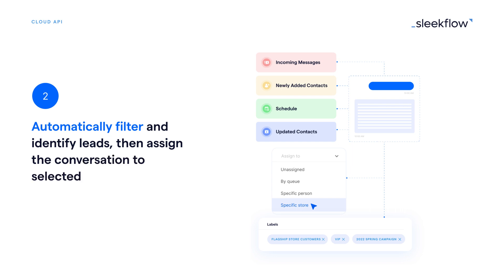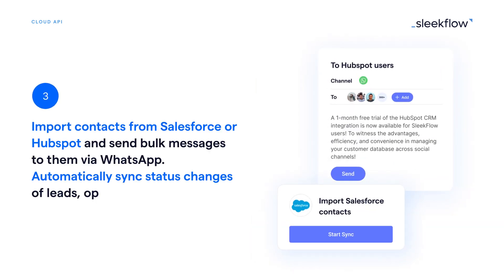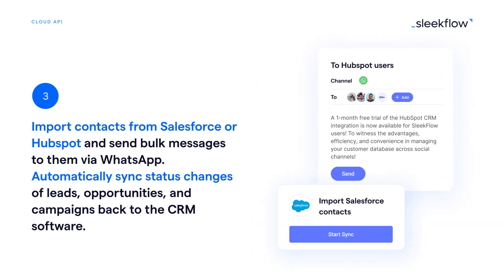Two: automatically filter and identify leads, then assign the conversation to selected reps. Three: import contacts from Salesforce or HubSpot and send bulk messages to them via WhatsApp. Automatically sync status changes of leads, opportunities, and campaigns back to the CRM software.